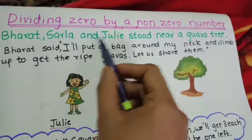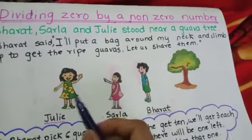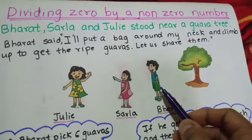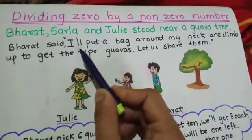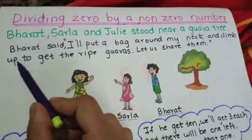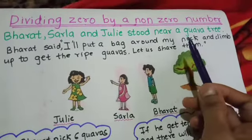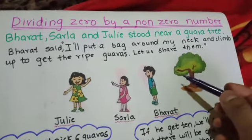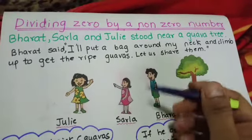Bharat, Sarla and Julie stood near a guava tree. This is a guava tree and these are the three children: Julie, Sarla and Bharat. Bharat said, 'I will put a bag around my neck and climb up to get the ripe guavas and let us share them.' He will climb up and get the ripe guavas, and whatever they get, they will share among the three.